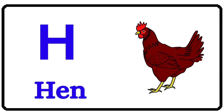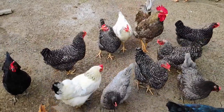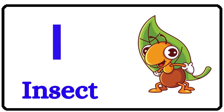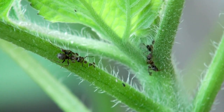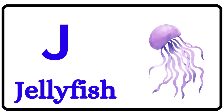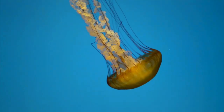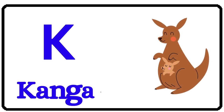H for Hen. I for Insect. J for Jellyfish. K for Kangaroo.